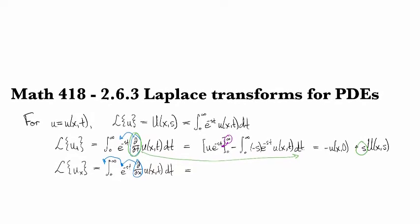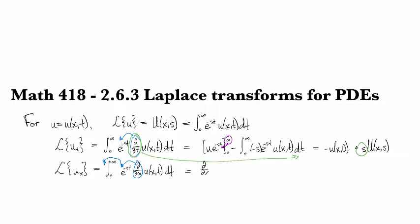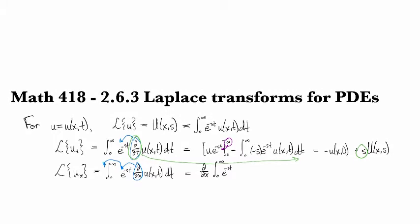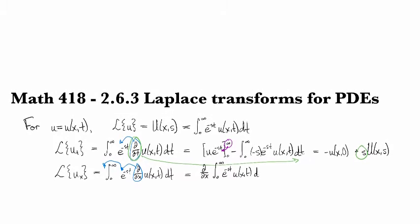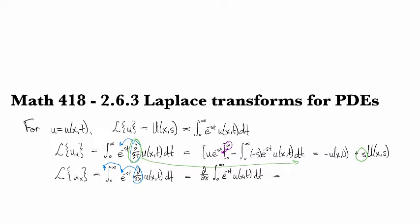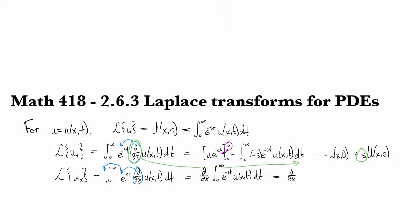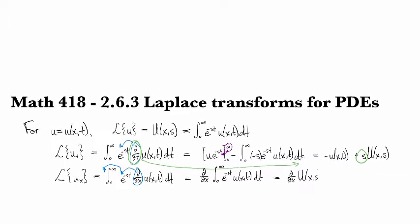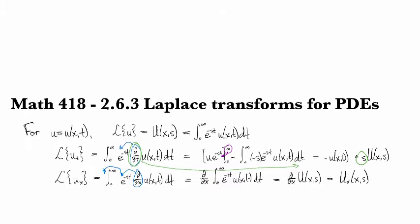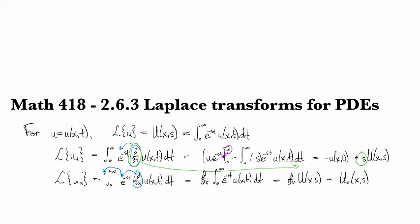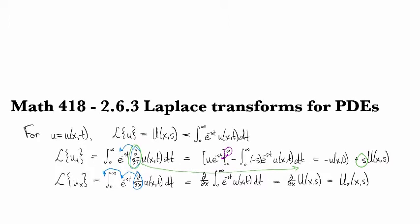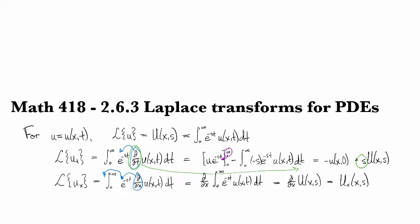And so then this is d/dx of the Laplace transform. So derivatives on the x on little u become derivatives with respect to x on big U. So those just roll right on through.